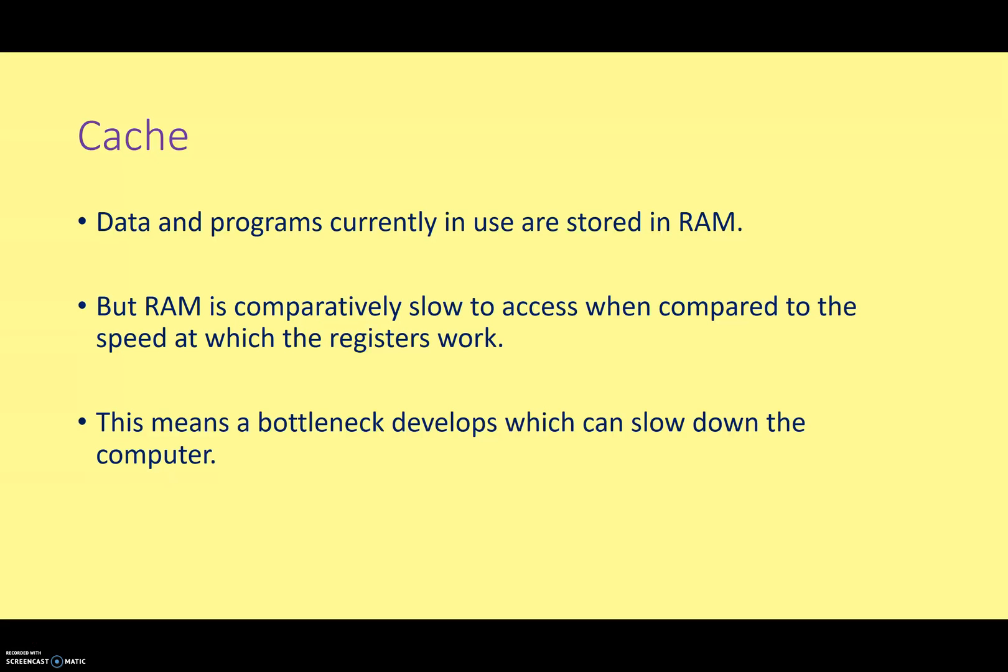Okay, another thing that is included in your CPU, wasn't on the diagram earlier, but it is very important, is what we call cache or cache memory. So the data and programs that you are running on your computer are stored in RAM, and your RAM on a modern system could be anything from 1 gigabyte to 4 gigabytes, 8 gigabytes, 16 gigabytes, but usually not more than that and usually not less.